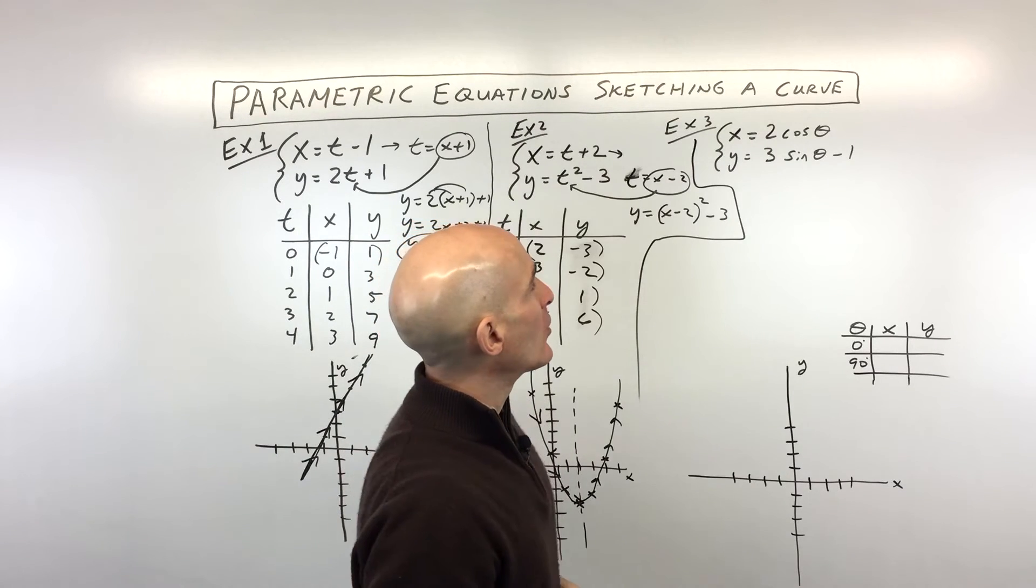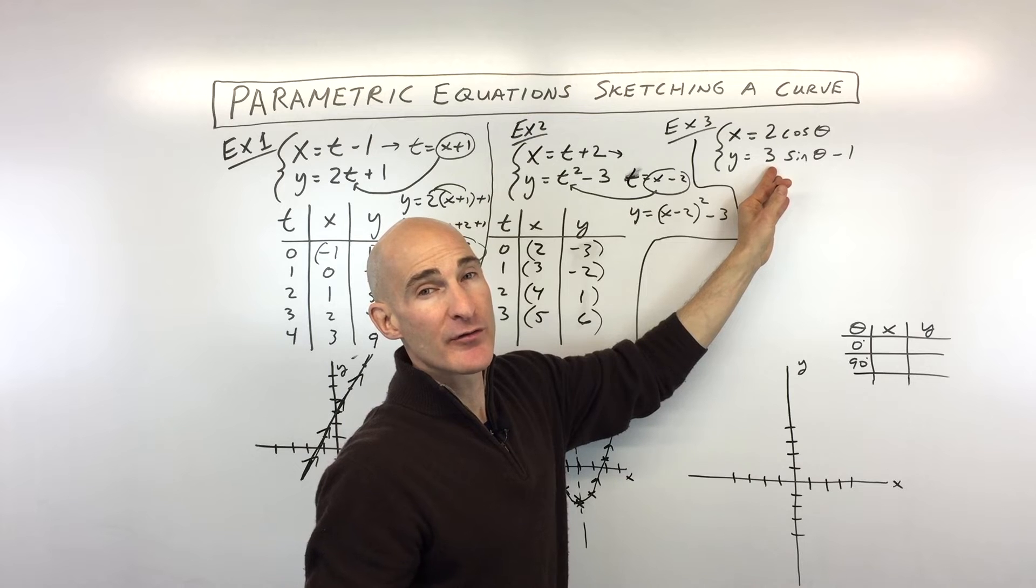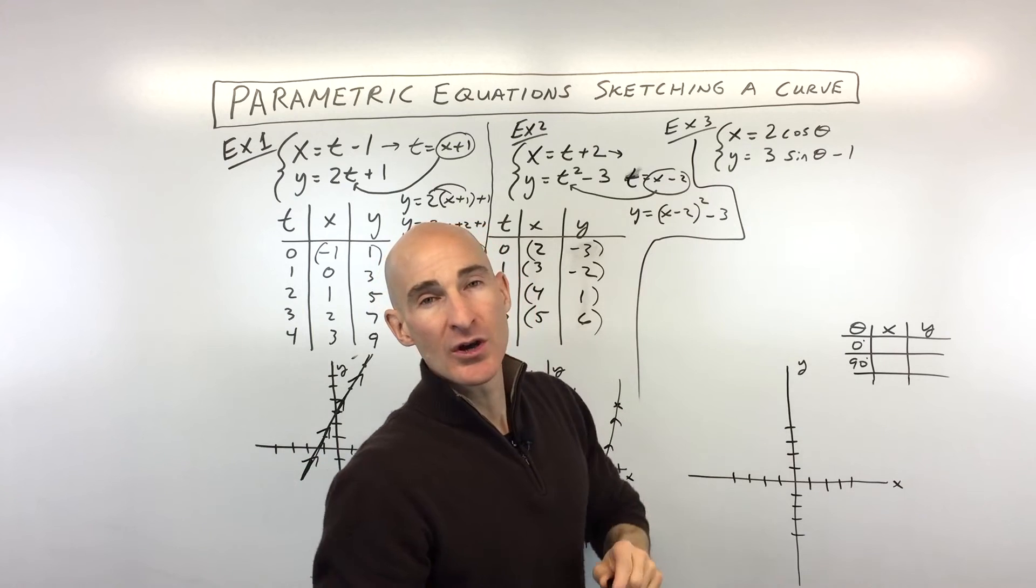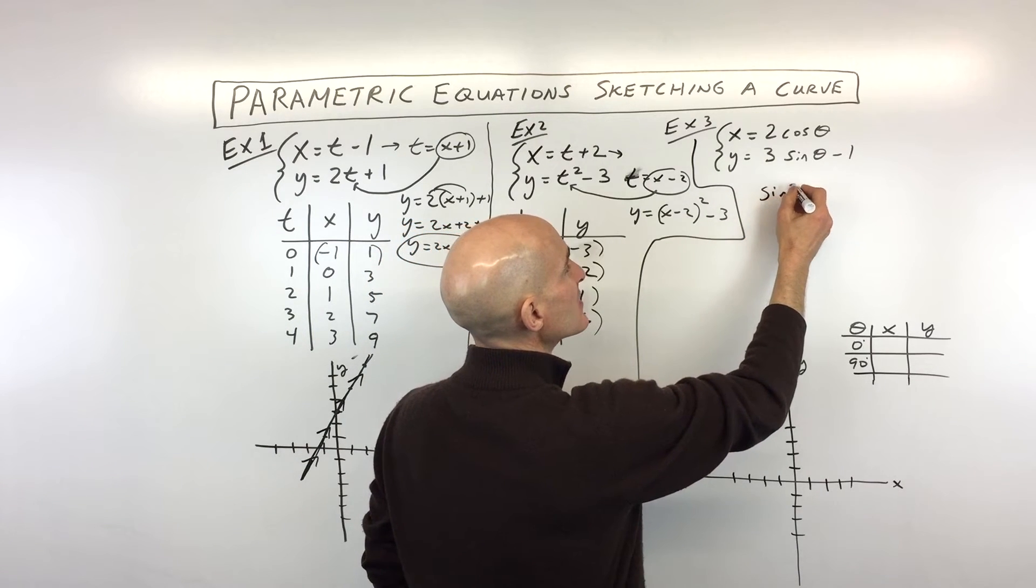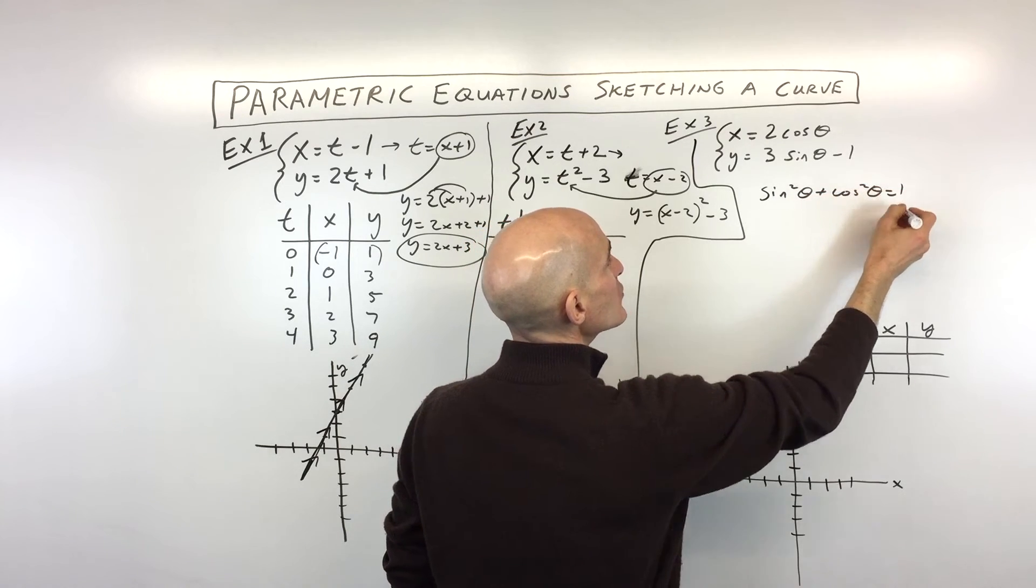Now, the other way, this one I think what we're going to do is we're going to jump right into eliminating the parameter first, as opposed to maybe making a table first. So the one thing that I want you to remember is the Pythagorean trig identity. Remember, Pythagorean trig identity looks like this: sine squared plus cosine squared equals one.